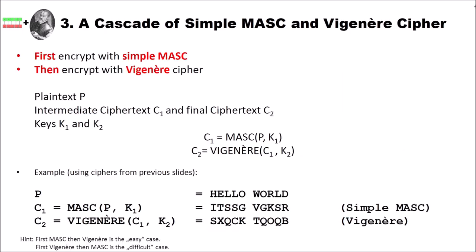Now let's look at a cascade of a simple monoalphabetic substitution cipher — which we abbreviate as MASC — and the Vigenère cipher. Our cascade first encrypts using MASC and then encrypts using the Vigenère cipher. Here is a more mathematical way to express this. We have plaintext P, intermediate ciphertext C1, and final ciphertext C2, with two keys K1 and K2. We obtain C1 by applying MASC on the plaintext using K1, then we apply the Vigenère cipher on C1 using K2 to get our final ciphertext C2.